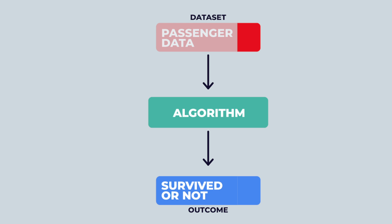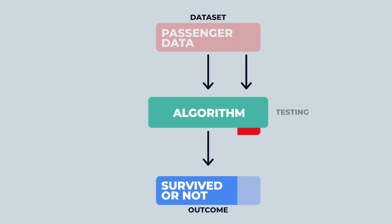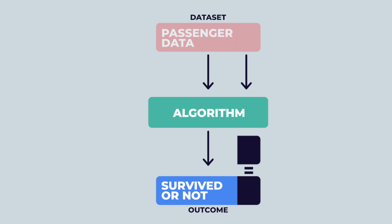Then for the remaining set, we cover the output and the algorithm reads the input and gives a certain output. Is it correct? If it is, that means the algorithm is working. And then there's also unsupervised learning, which is basically finding hidden patterns within the data without making a prediction.